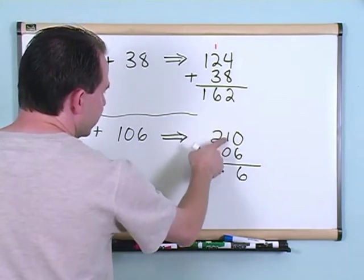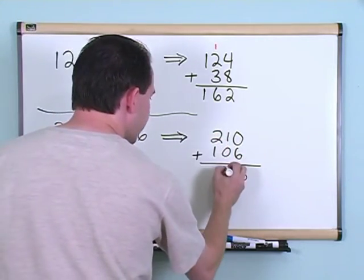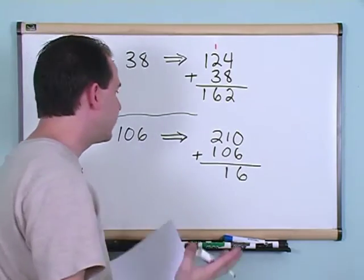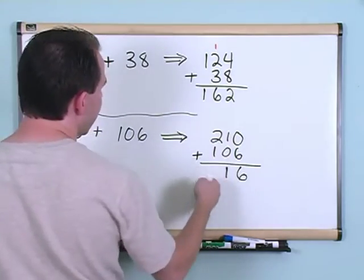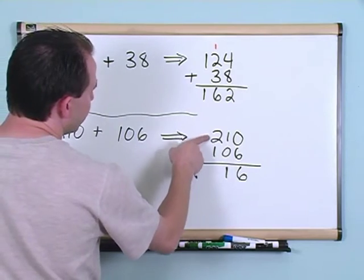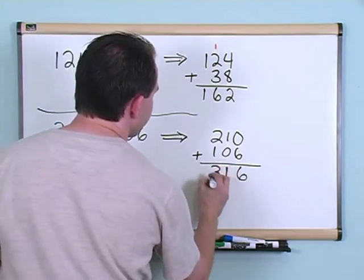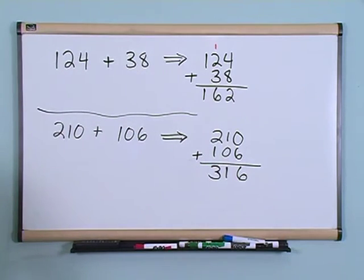And look here, we have in the next column, one plus zero. Again, it's just going to give you one because anything plus zero is just going to give you itself back. And we're done with that. And then we move to this column, two plus one is just going to give us three. So the answer is 316.